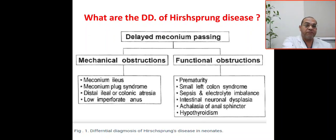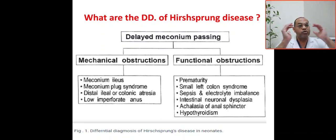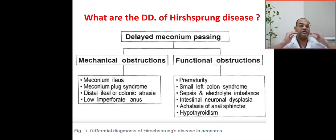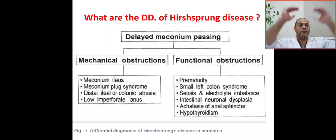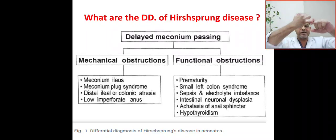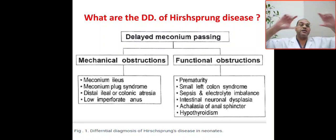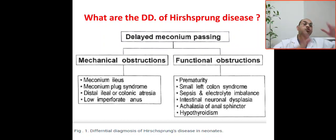Mechanical obstruction includes anatomical or structural obstruction. It involves the ileum, colon, and anus. In the ileum, it will be meconium ileus, and you have to differentiate meconium ileus from meconium plug syndrome. The second cause will be distal ileal or colonic atresia.